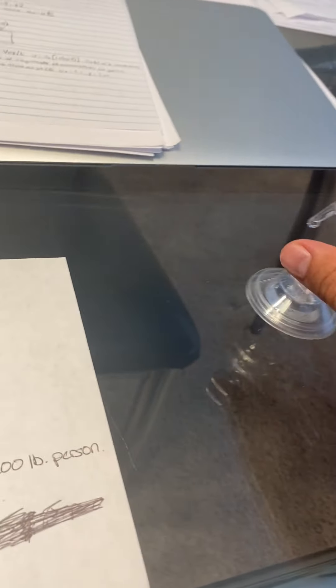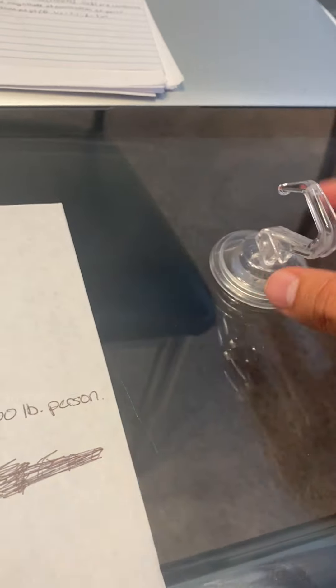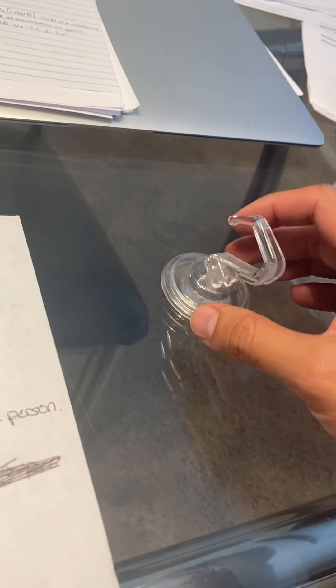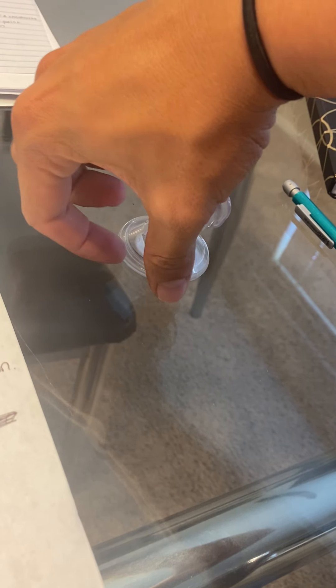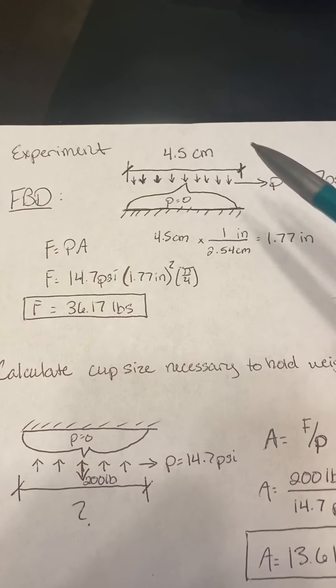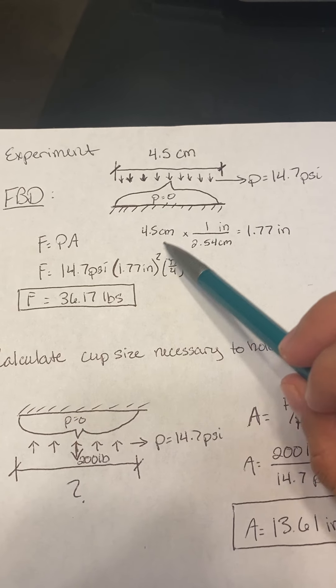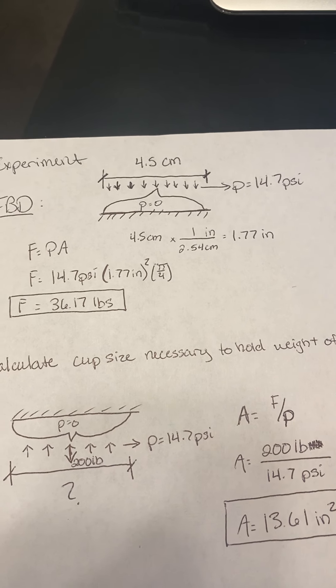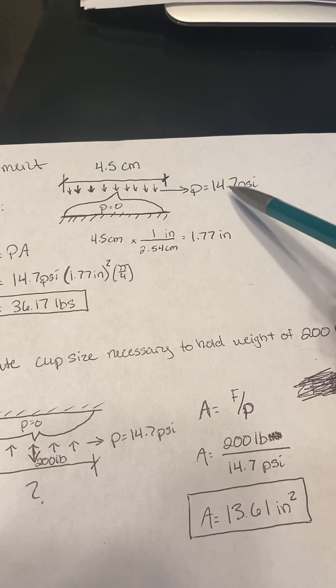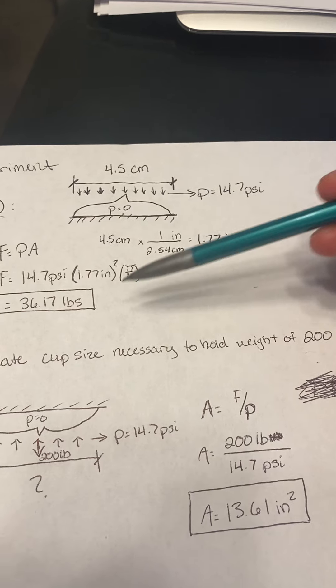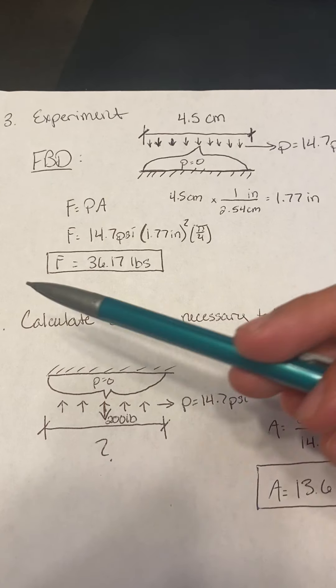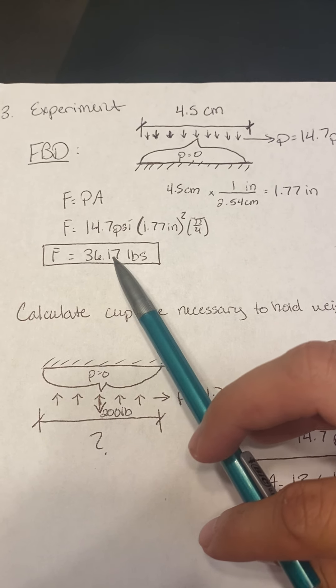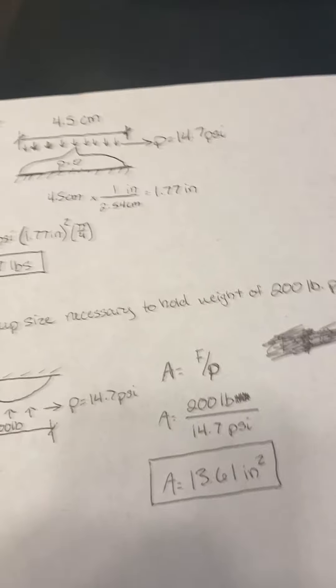It's around the same but it's definitely going to vary—from research I've done, it has a different coefficient of friction. So I converted 4.5 centimeters to 1.77 inches, and of course you have the atmospheric pressure pushing down against the suction cup. This gives you a force of 36.17 pounds.